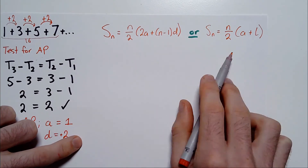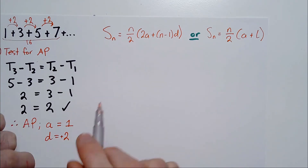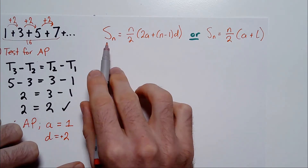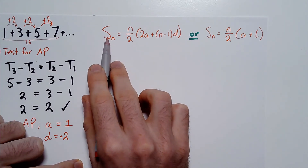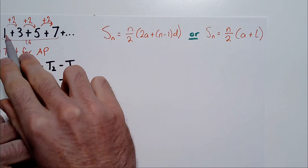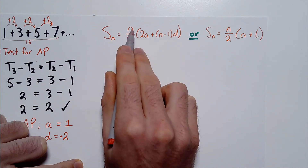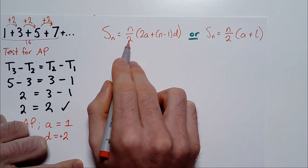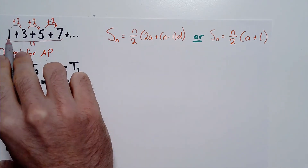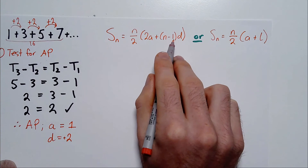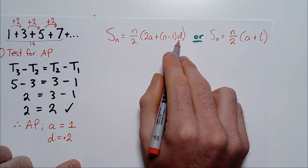The first formula you can use — and you have two choices — is this: Sn, the sum of n terms, equals n over 2, bracket 2 times the first term A plus bracket n minus 1 times D. Here n is 4, A is 1, and D is positive 2. So S4 equals 4 over 2, bracket 2 times 1, plus bracket 4 minus 1 times 2. I put the substituted values in brackets to keep things clear — 2 times 1 rather than writing 21.